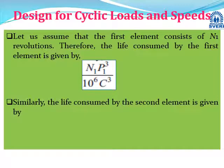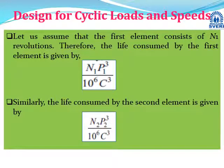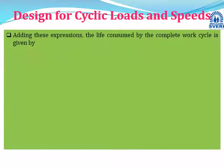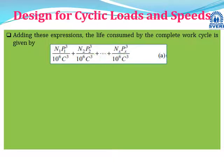For the second element the life consumed is n2·p2^3 / (10^6 · C^3), and for the third element n3·p3^3 / (10^6 · C^3). Adding all elements comprising a complete cycle gives the total work cycle life consumption: [n1·p1^3 + n2·p2^3 + ... + nx·px^3] / (10^6 · C^3). This represents one complete revolution split into its elements.